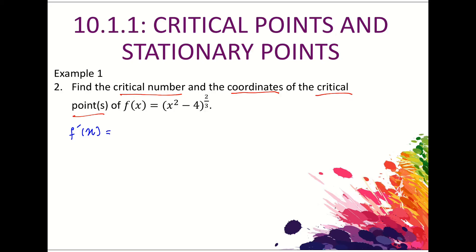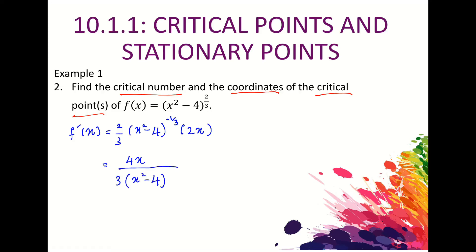f'(x) is equal to (2/3) times (x² − 4) to the power of negative 1/3 times 2x. Rearranging, we get 4x over [3 times (x² − 4)^(1/3)]. Since there is an x variable in the denominator, there will be a situation when f'(x) is undefined.